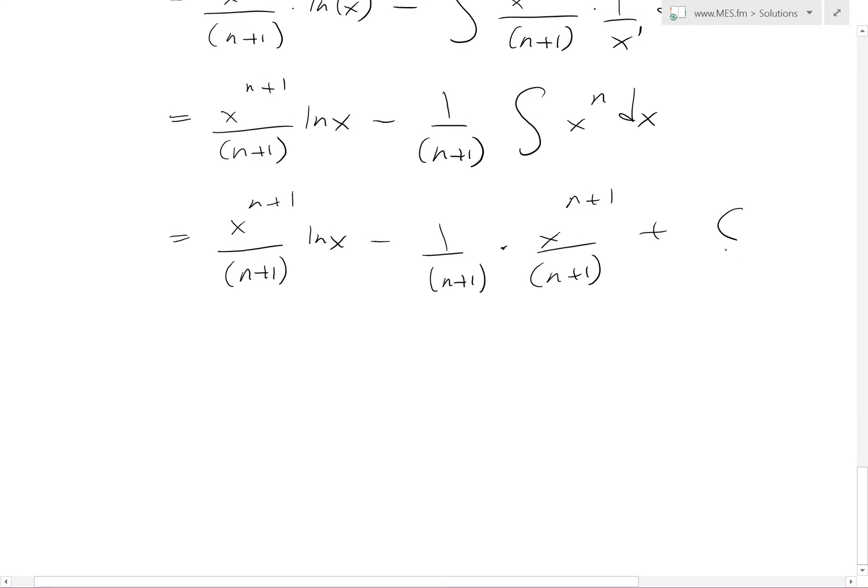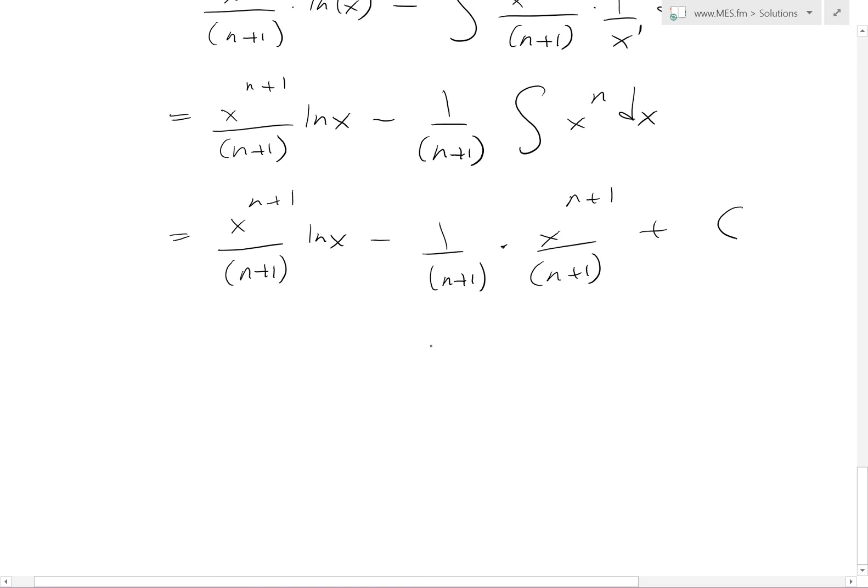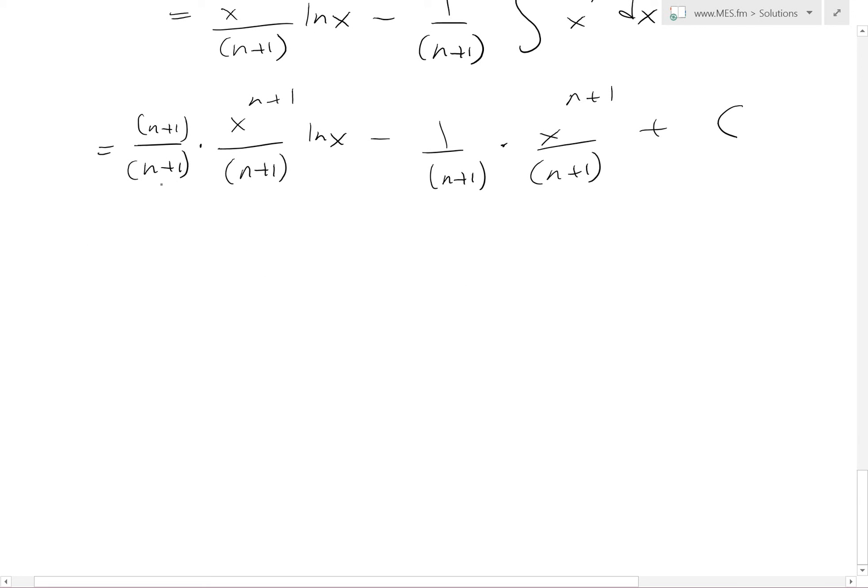So something similar to our answer that we derived, but this is all expanded. So what we could do is find the, we'll add up the, factor out actually the common denominator. This goes to n plus 1, this says n plus 1 squared. So what we'll do is multiply this top and bottom by n plus 1, so that we have an n plus 1 squared, and then we'll take that outside of it, as well as this x^(n+1), because it occurs in both sides. So we're basically factoring this entire side out.